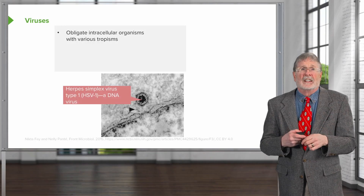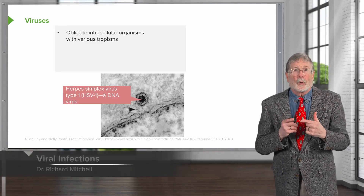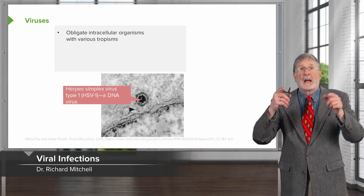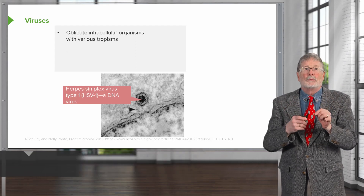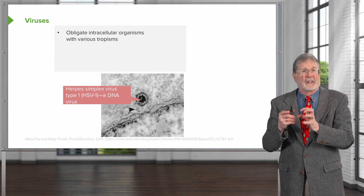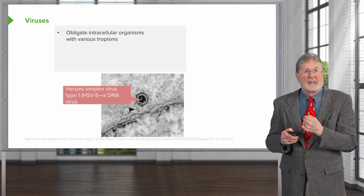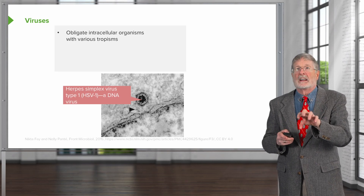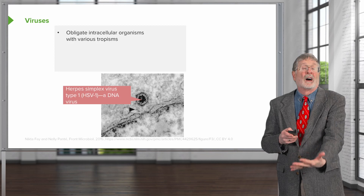Viruses first. So these are obligate intracellular organisms. They can live outside, but they can't proliferate without being within a particular cell. They have different tropisms depending on what cell surface receptor they bind to.